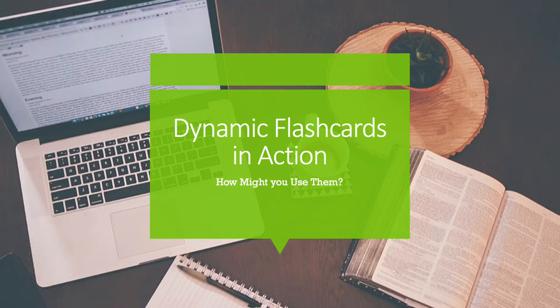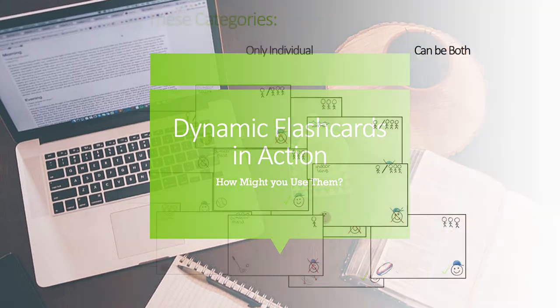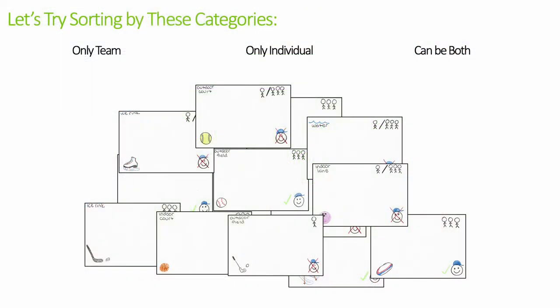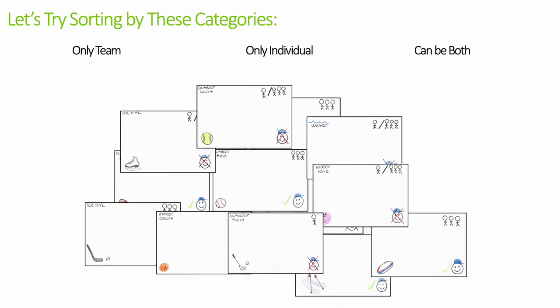So how do we use dynamic flashcards? Let's see them in action. Let's first try to sort by these categories with our completed cards — let's sort by only team sports, only individual sports, or sports that could be either.